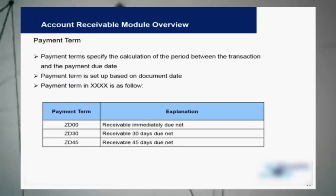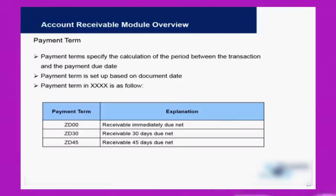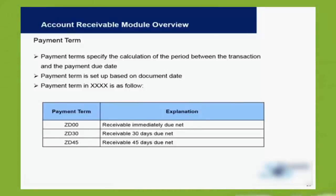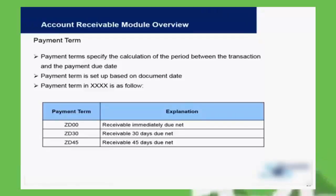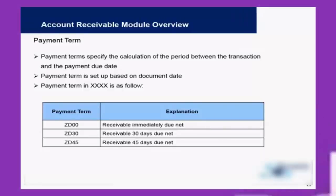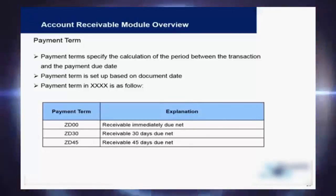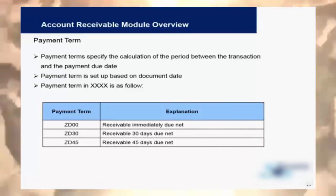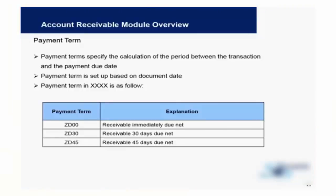Payment terms are the different terms agreed with a customer. For example, you can agree with one customer that they should pay immediately once a sale is completed. With long-term customers who you have a good relationship with, you can have different payment terms like 30 or 45 days. You can also provide a cash discount to customers if they make a payment within a specific period such as 15 or 20 days. Payment terms are assigned directly in the customer master.